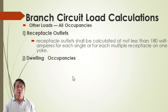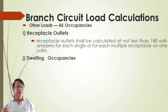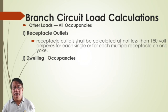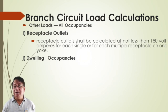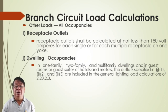If you can determine where to place your outlets, count how many outlets you have, then consider 180 volt-amperes for each outlet as the considered load in that specific branch circuit. For dwelling occupancies — one-family, two-family, and multi-family dwellings — consider Table 2.20.3 calculations.